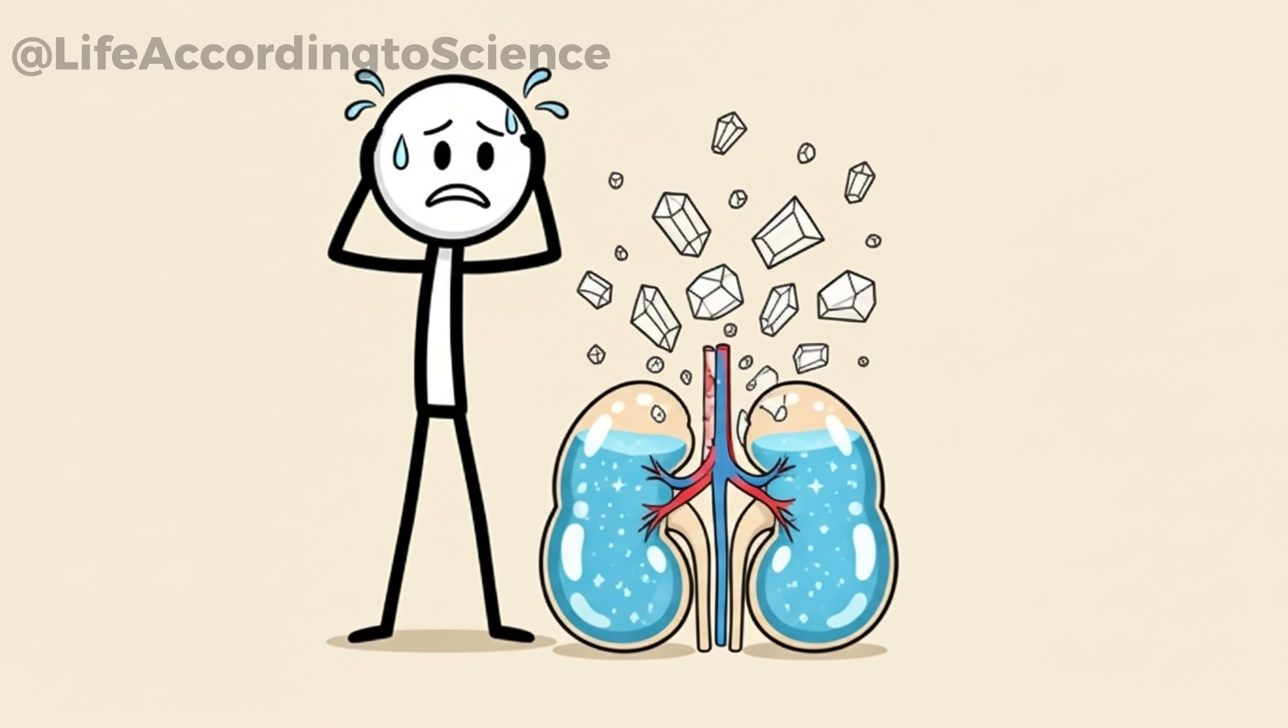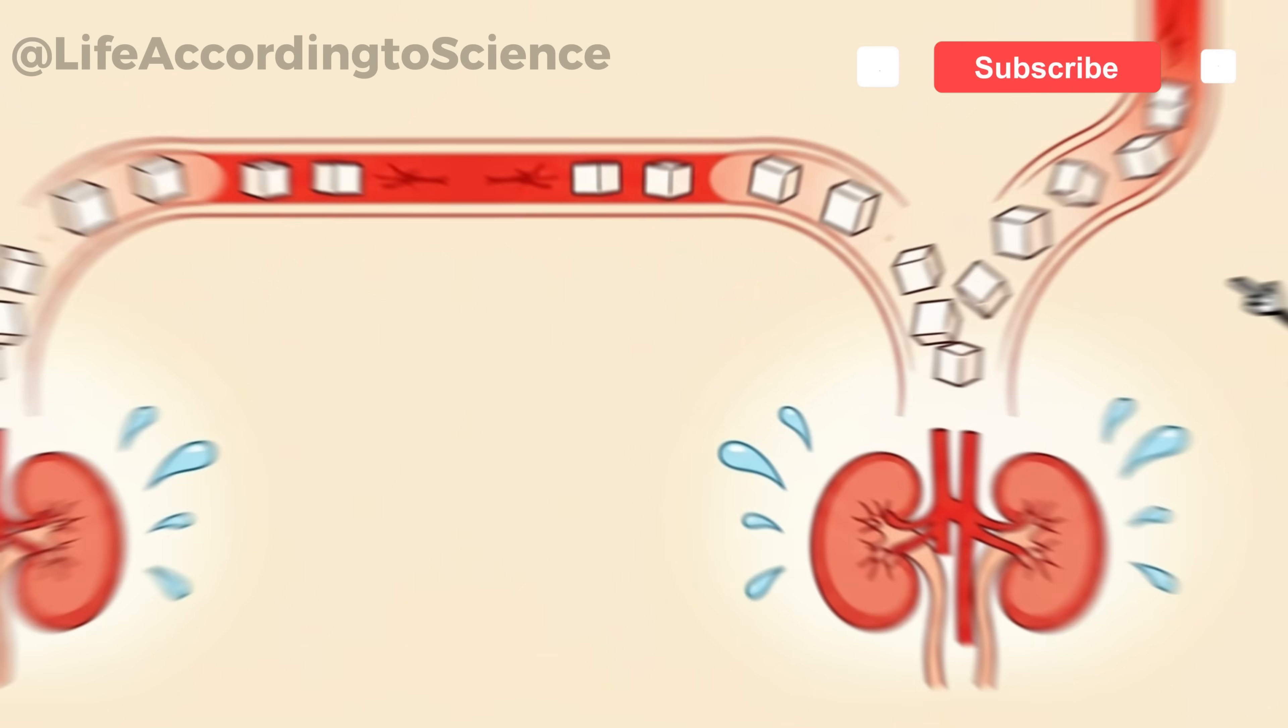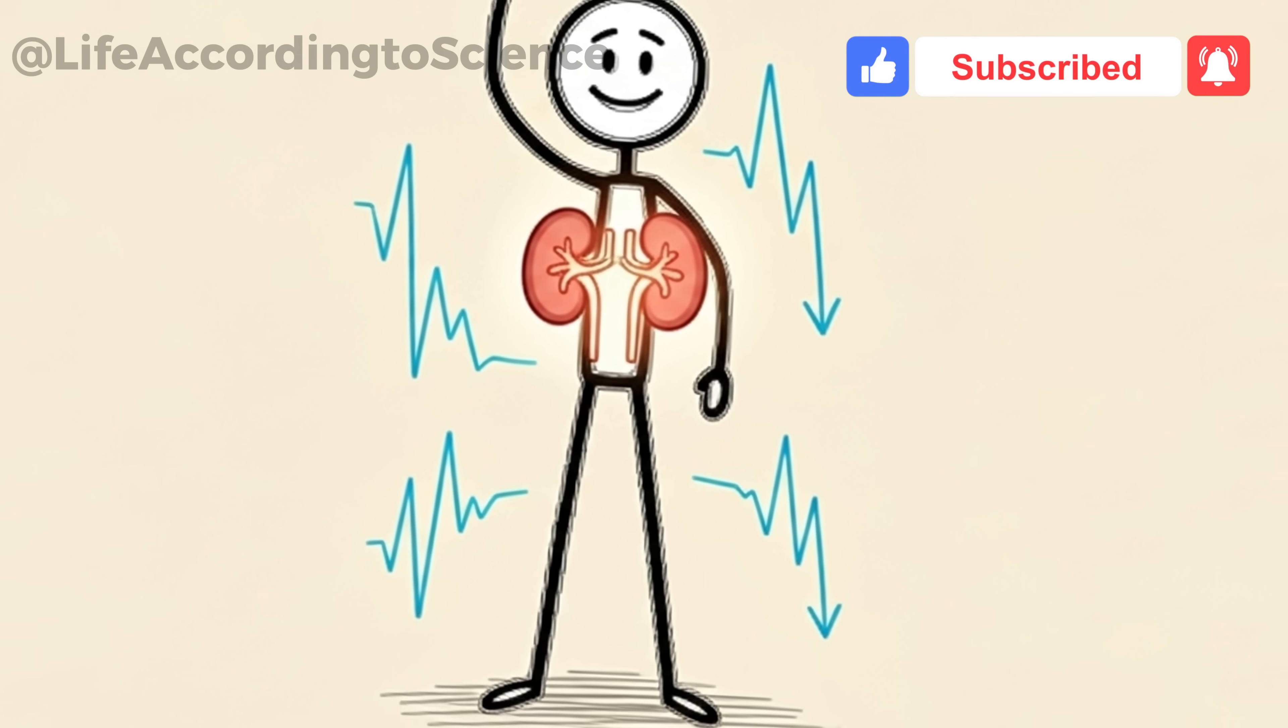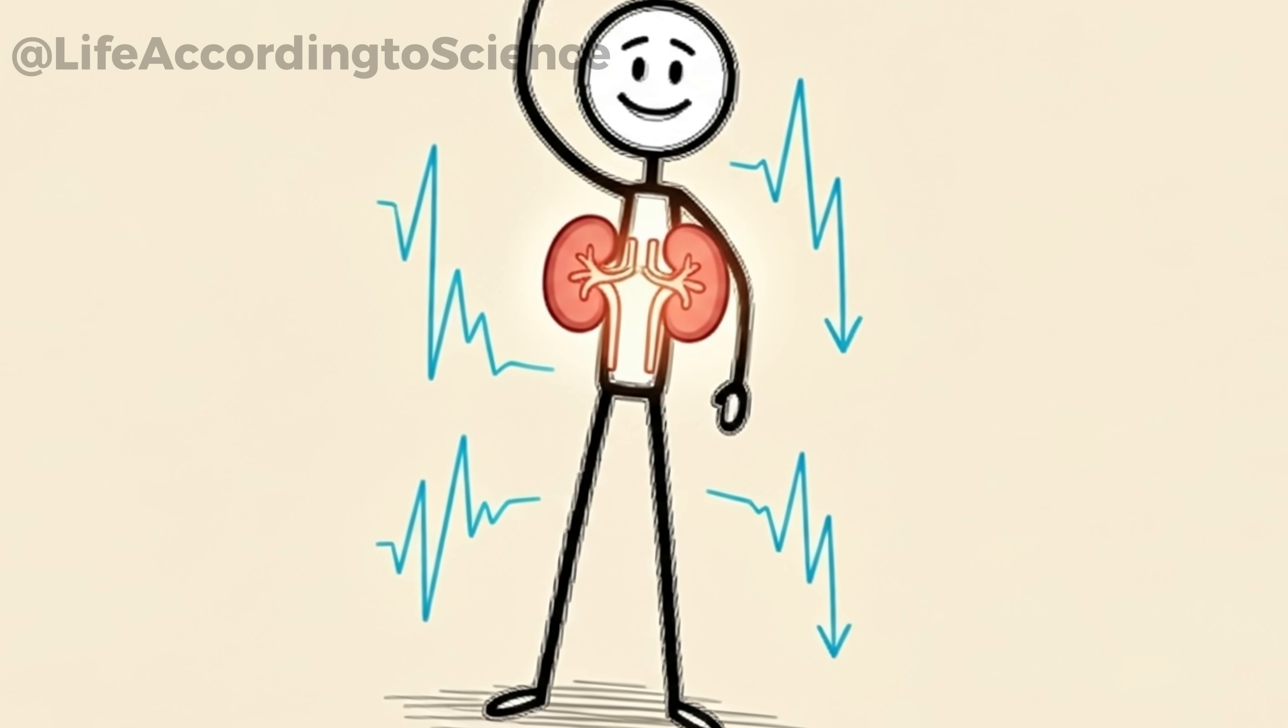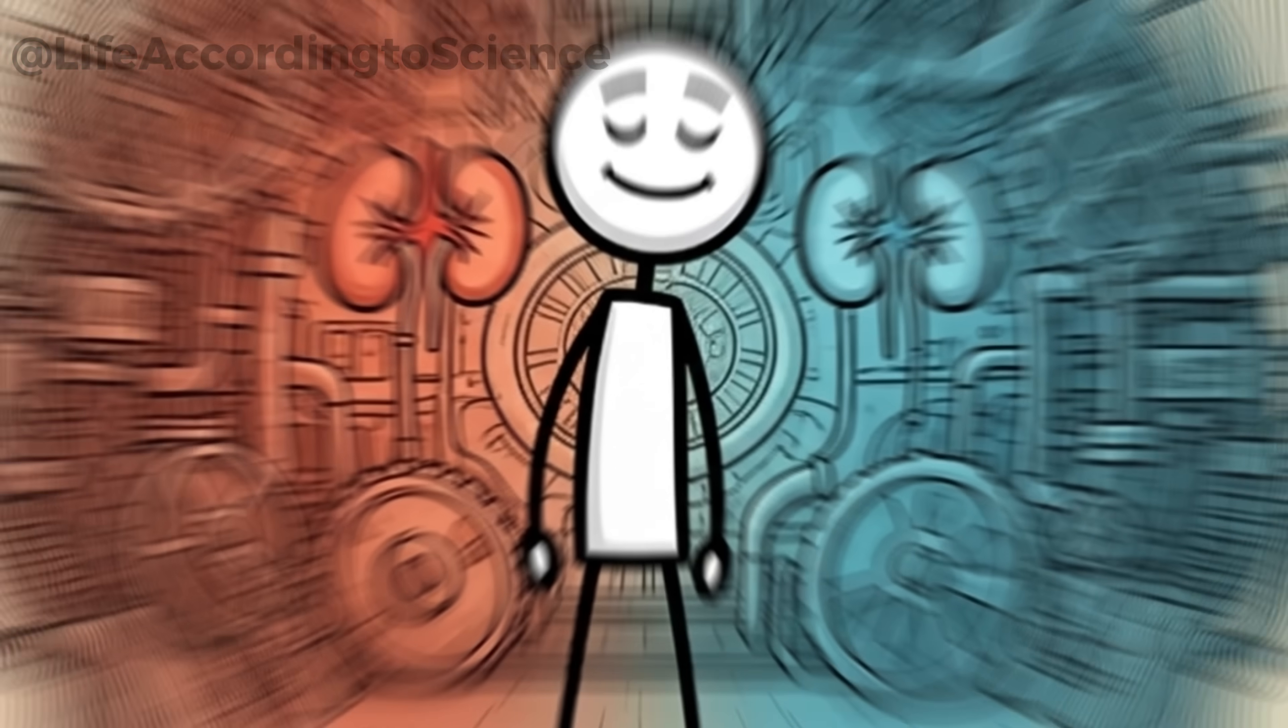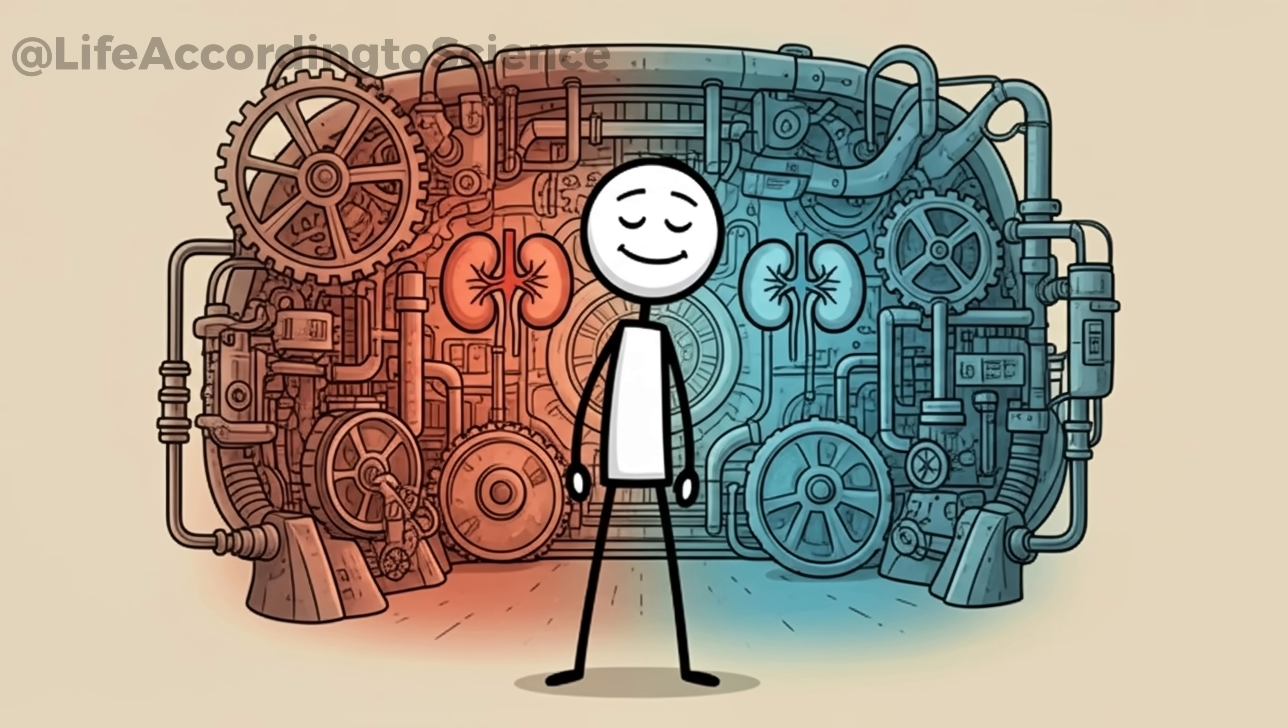Their kidneys are literally holding on to extra water, trying to balance the chaos sugar creates in the bloodstream. But here's the fascinating part. When you quit sugar, this water retention begins to reverse. Within weeks, blood pressure tends to drop, and the kidneys find it easier to maintain balance. For some, this alone can reduce the risk of hypertension-related kidney damage. It's like turning down the volume in a noisy room. Suddenly, the kidneys can work in peace.